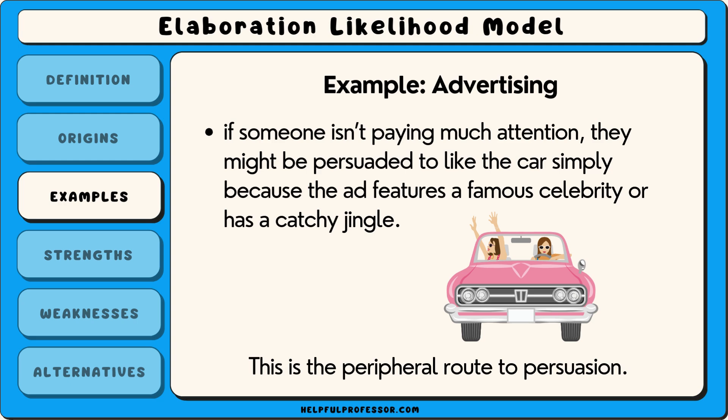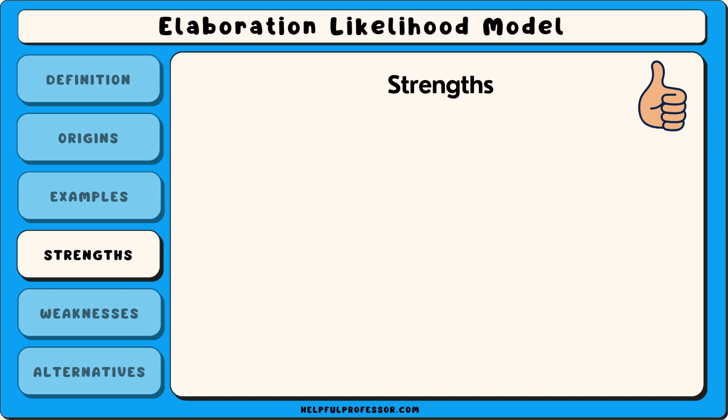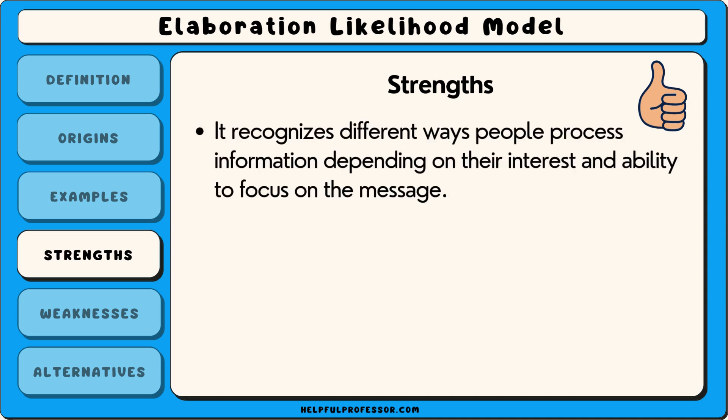Both can work, but the central route leads to more thoughtful and lasting decisions. A strength of the elaboration likelihood model is that it recognises different ways people process information, depending on their interest and ability to focus on the message.